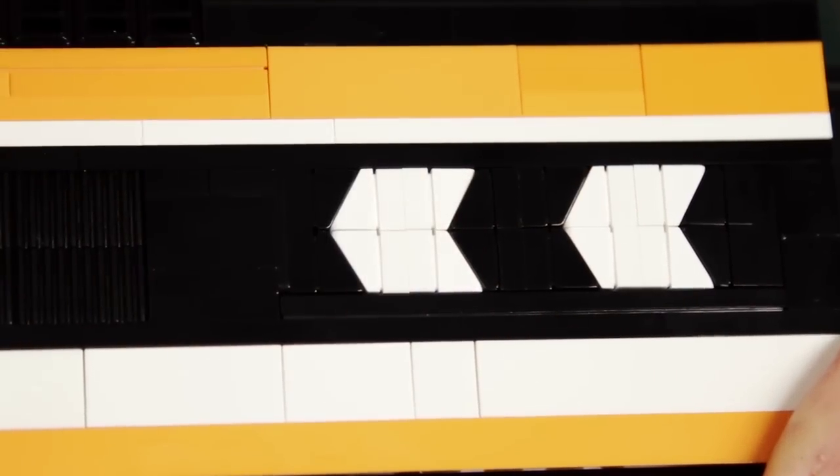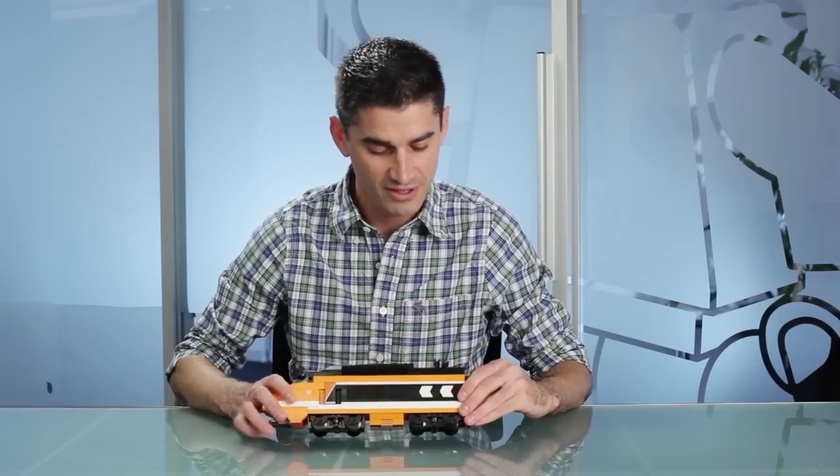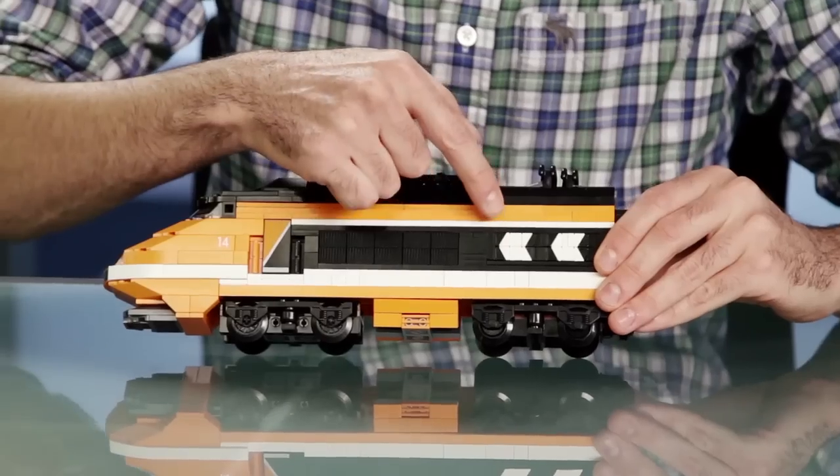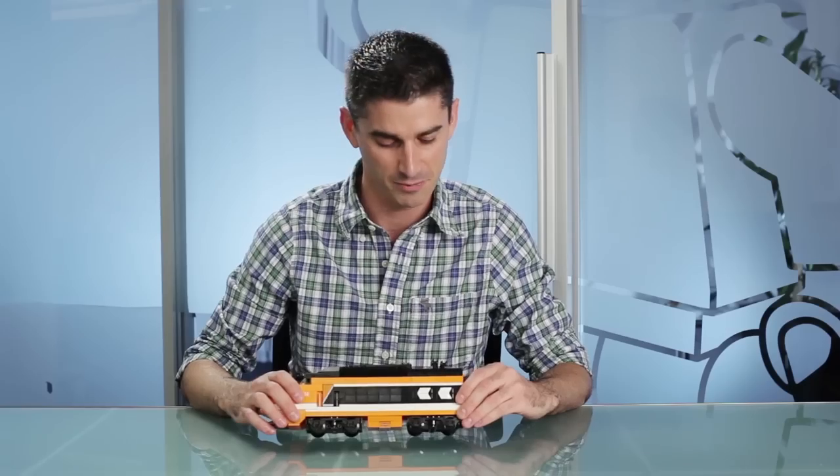So this back area here is a really fun section because this chevron or these arrows are all brick built. So there are tiny little pieces, little slopes that actually make up each part of that, which we think you'll really have fun exploring and building.